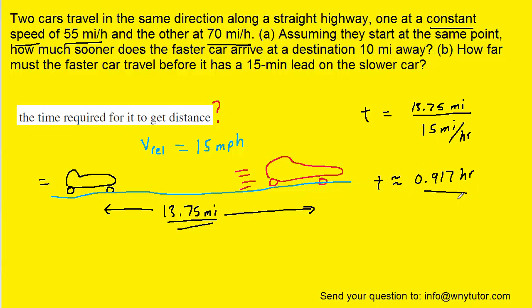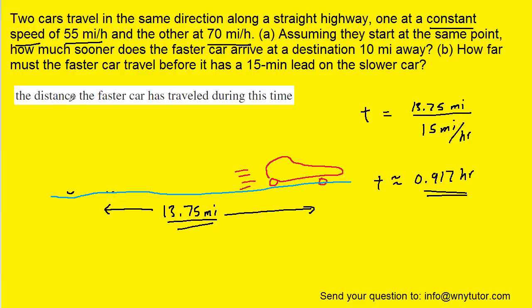Now, that time comes out to approximately 0.917 hours, and now we can answer the actual question. And that is, what is the actual distance the faster car has traveled during this time?